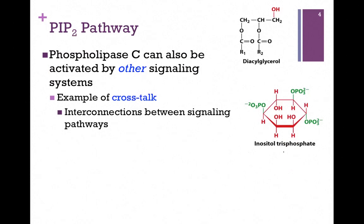It's also interesting to note that phospholipase C can also be activated by other signaling systems — in other words, there might be other reasons to activate this enzyme and turn on those pathways. This is an example of what's referred to as crosstalk, that is, interconnection between signaling pathways. We might need the same pathway to work under different circumstances, or we might need two pathways to interact with one another under the same conditions.